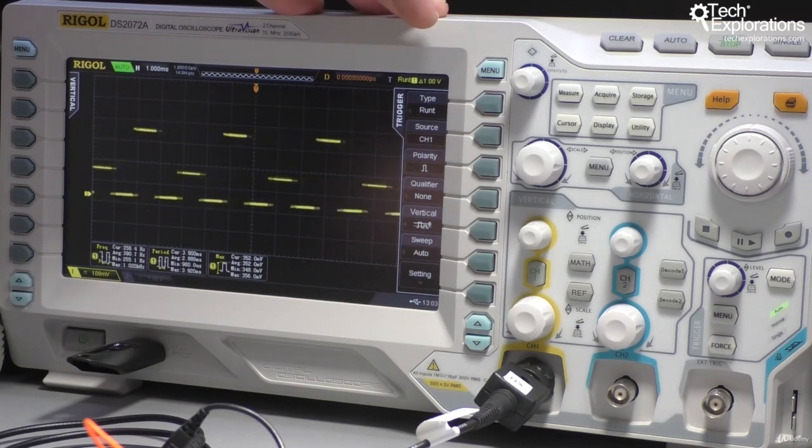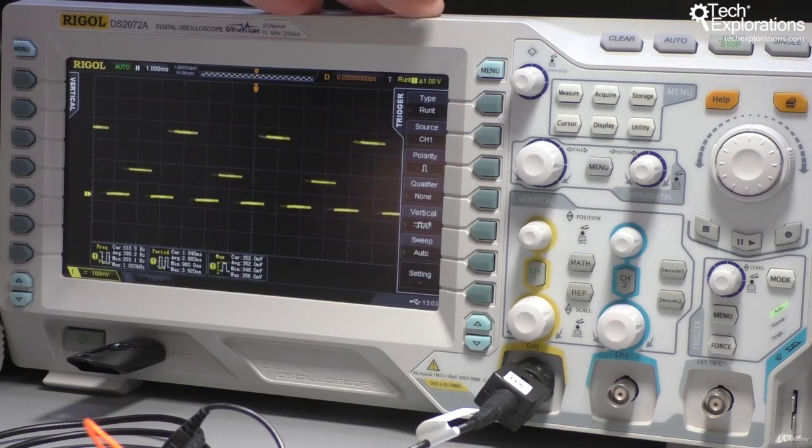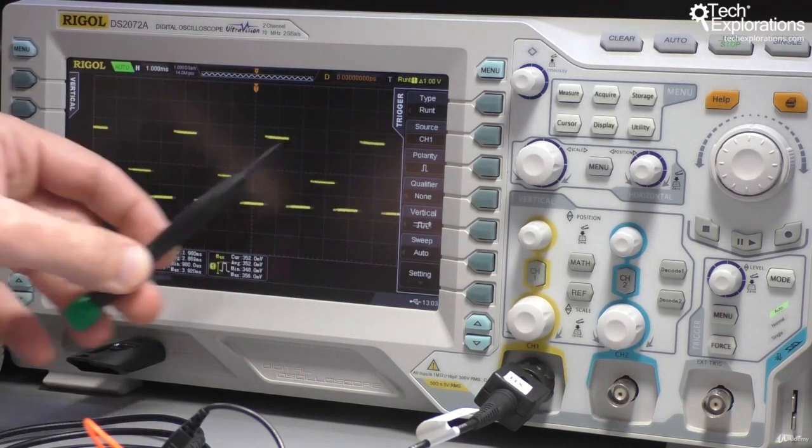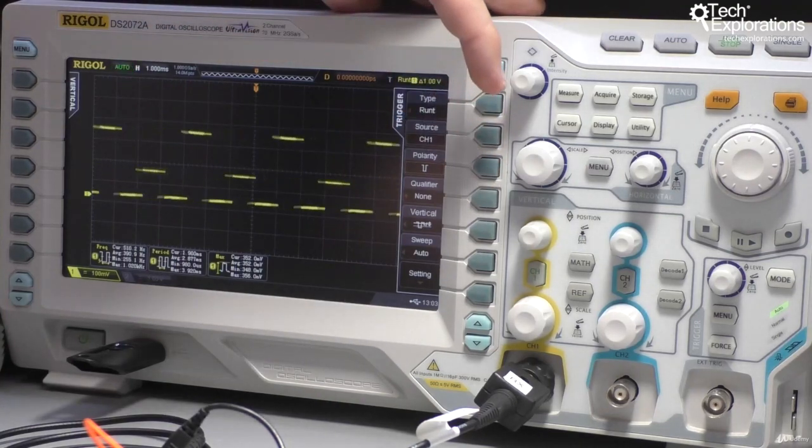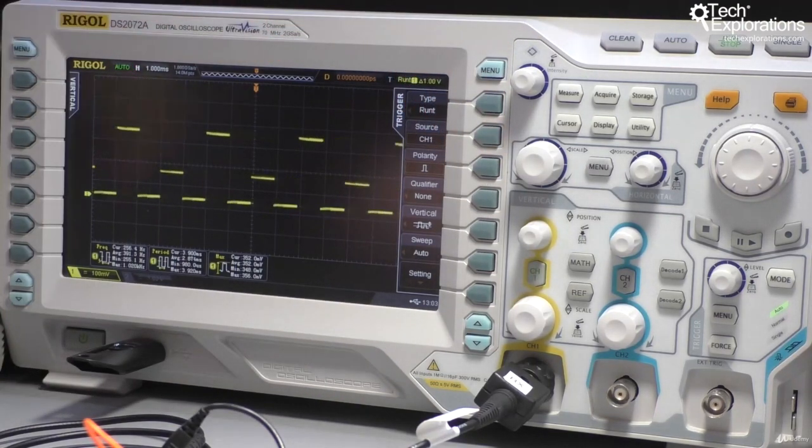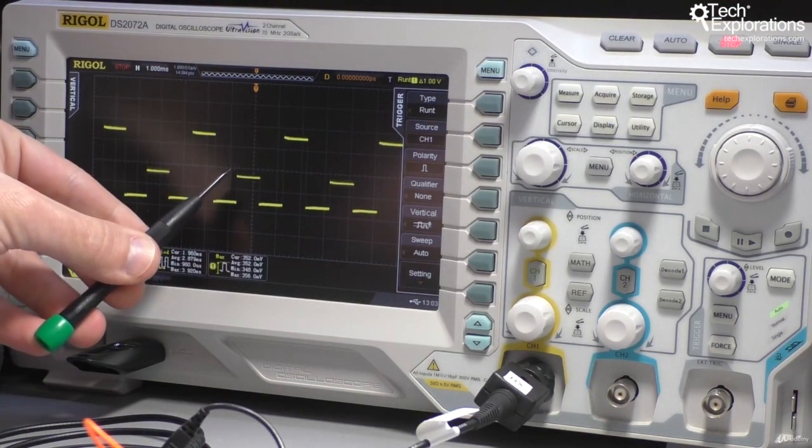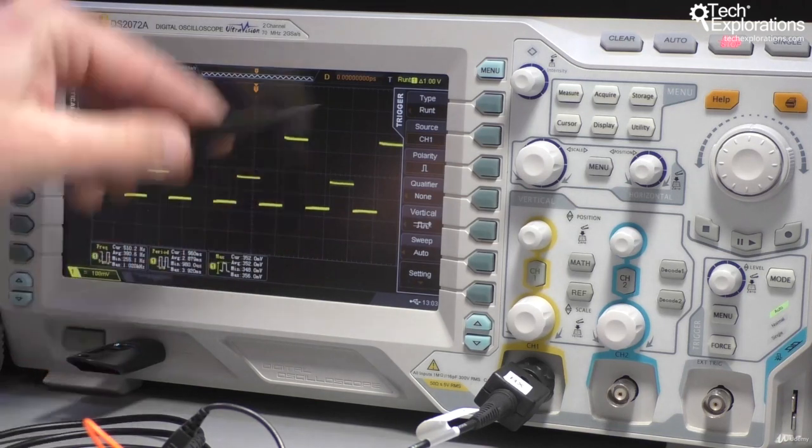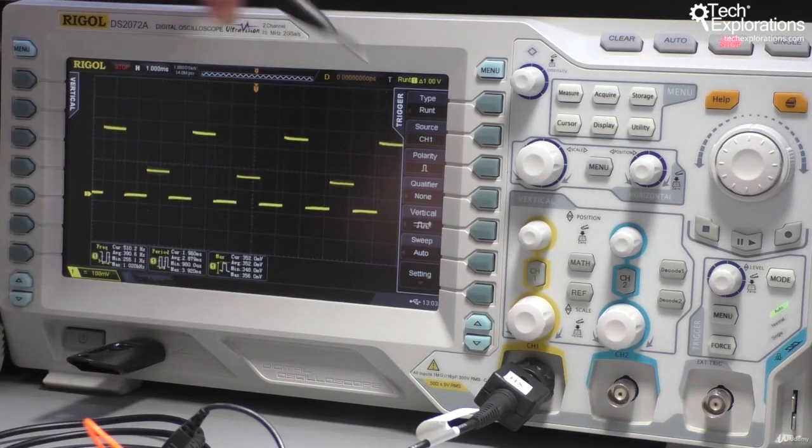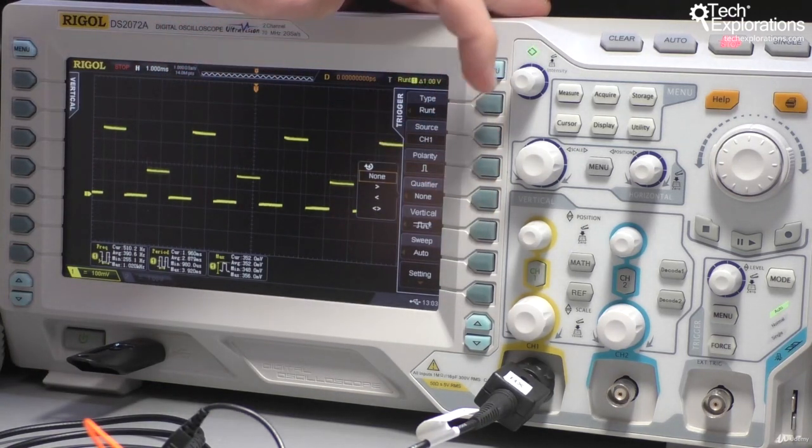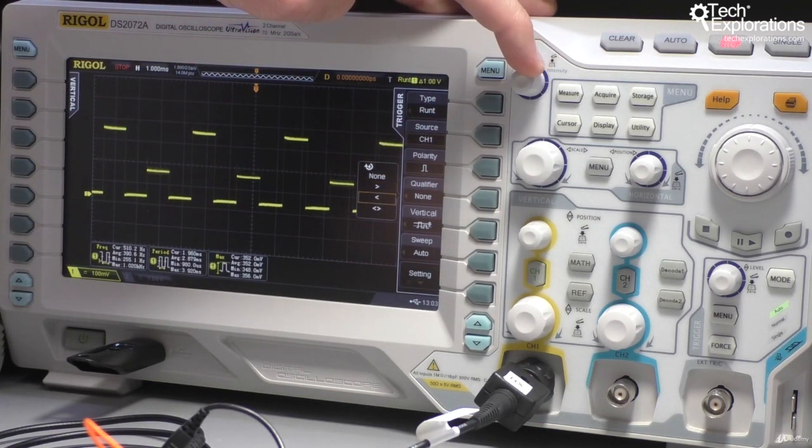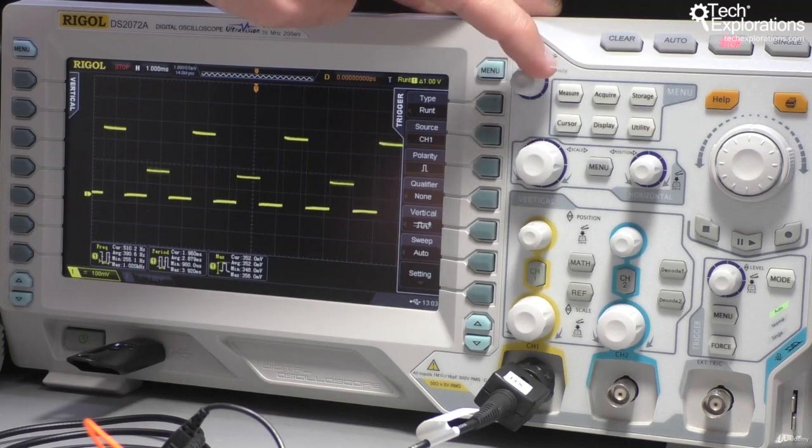So the Runt trigger type gives us a few options to try out. We can try out the polarity. We've got two options for the polarity, either this one or the negative. At the moment, because the Runt trigger goes up instead of down, I'm going to use the positive polarity. The qualifier allows me to set maximum and minimum voltage levels and then whether I'd like the trigger to be detected when it's above, below, or within a range of voltages. I'll leave it aside for now and come back to this in a minute.